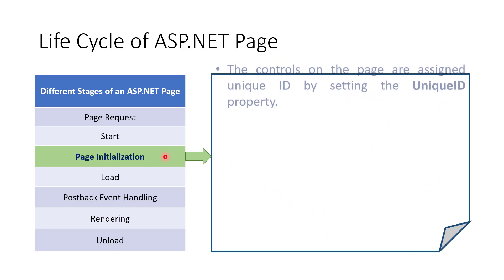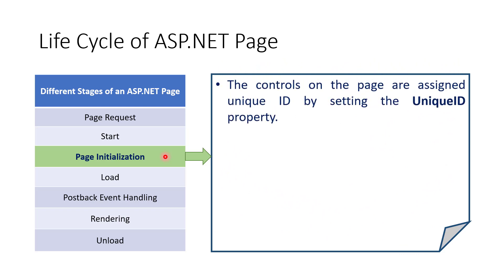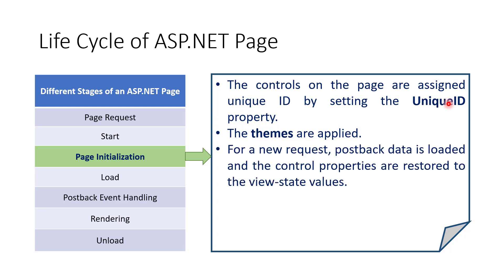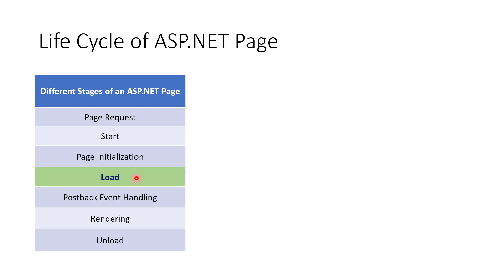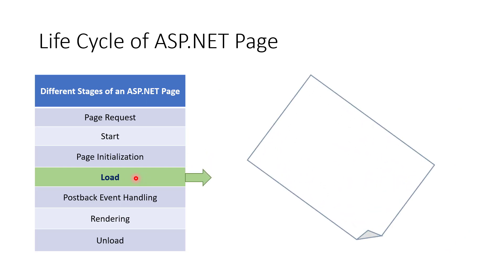The third stage is Page Initialization. In this stage, each control on the page is assigned a unique ID by setting the UniqueID property. If there are any themes, they are applied to the page at this stage. If the request is an old one, the postback data is not yet loaded and control property values still need to be restored from the view state.